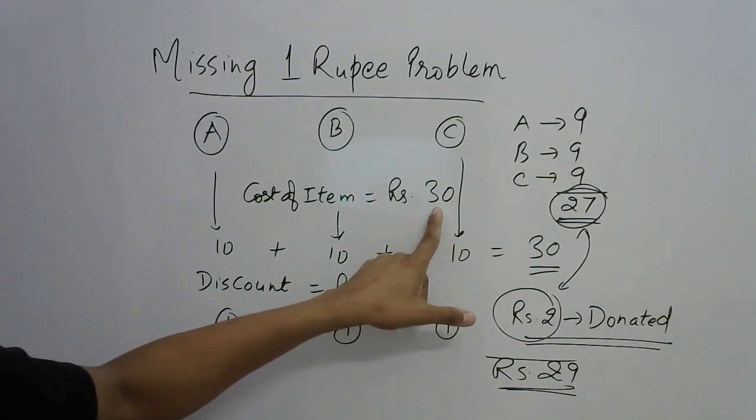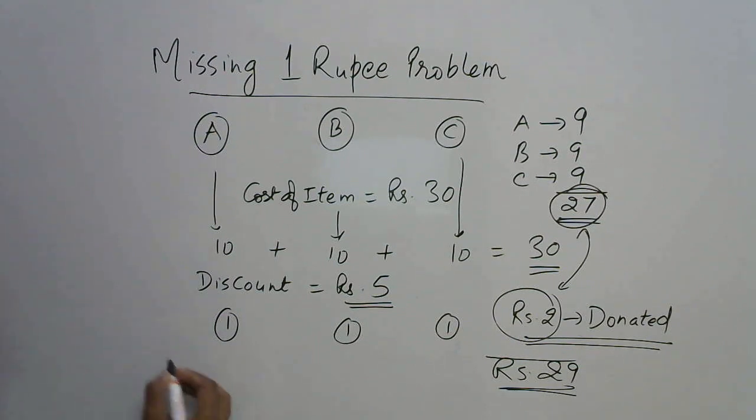So total here is 27 and rupees 2 donated, so 27 plus 2 becomes 29. However, the cost of the item is 30 rupees. So your question is, where is the missing 1 rupee?